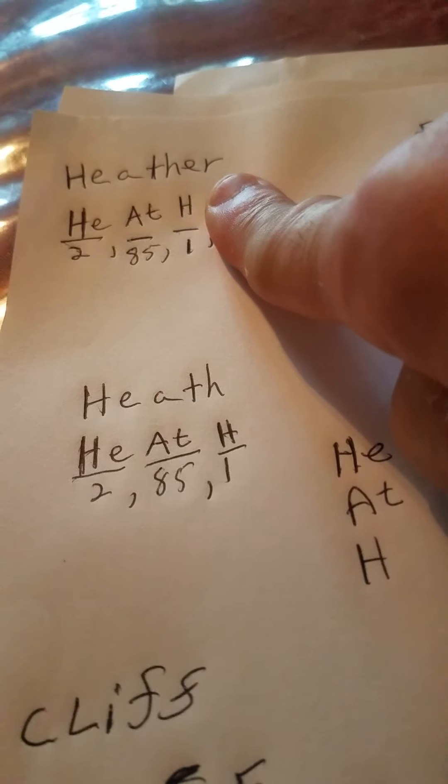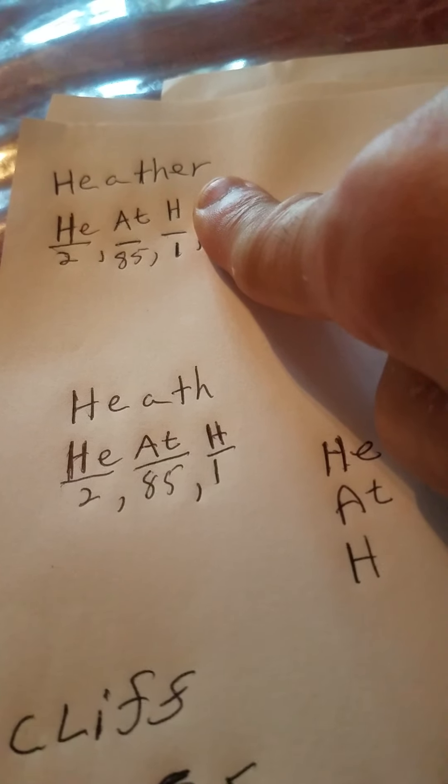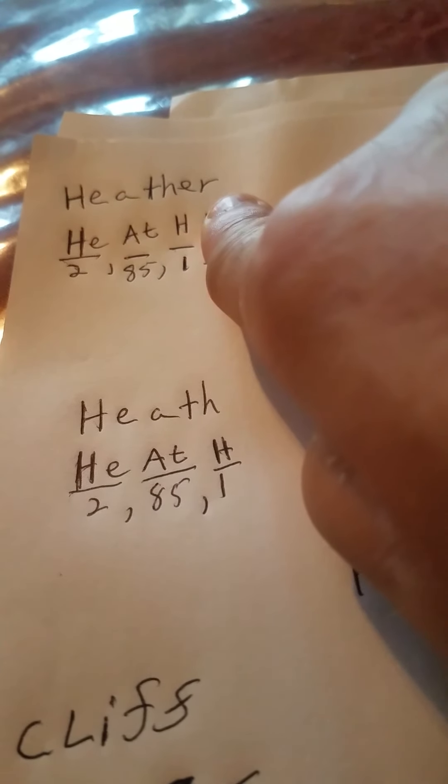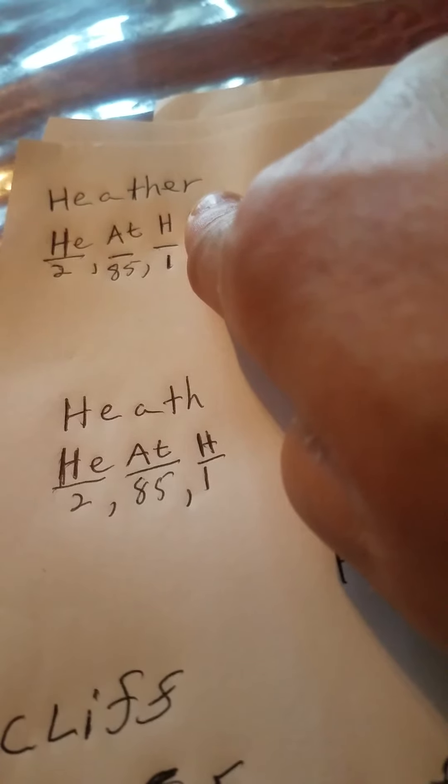So you got two for helium, 85 for astatine, and H-1. You see it? Same thing there. The only difference is I left out the E-R.